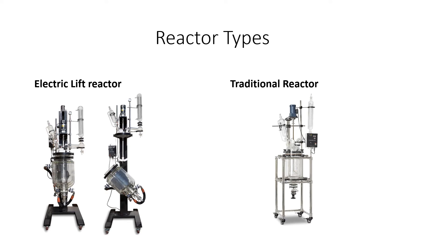Now we have a couple of different types of reactors here. The one over to the left is an electric lift reactor. What makes this special is that it's able to separate both the top cap part — which has the condenser and all that connected to it — away from the body of the reactor. This means you're able to easily get inside there and remove or add any kind of solids really easily.